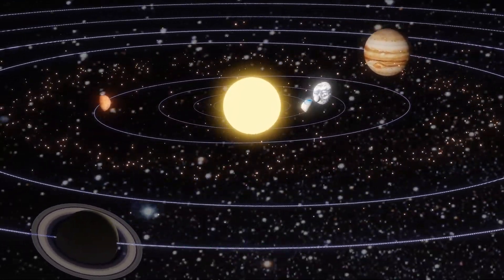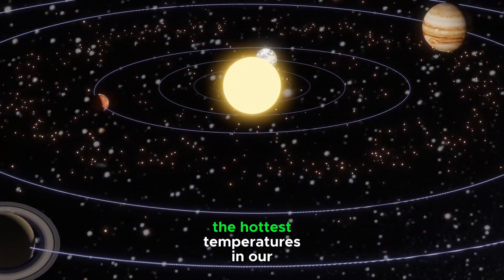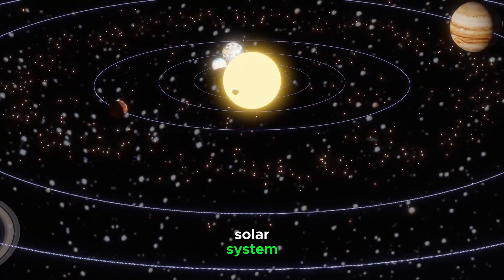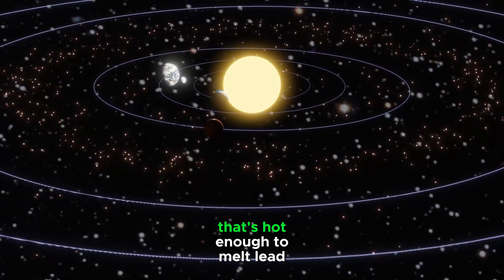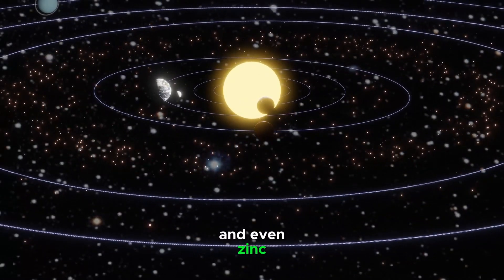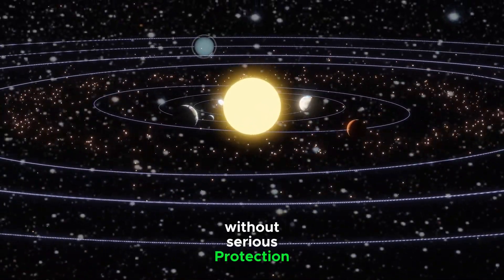Scorching Temperatures. Mercury is a furnace. Its proximity to the sun means it experiences the hottest temperatures in our solar system. The daytime temperatures can reach a staggering 430 degrees Celsius. That's hot enough to melt lead and even zinc. No human or spacecraft could withstand such heat without serious protection.